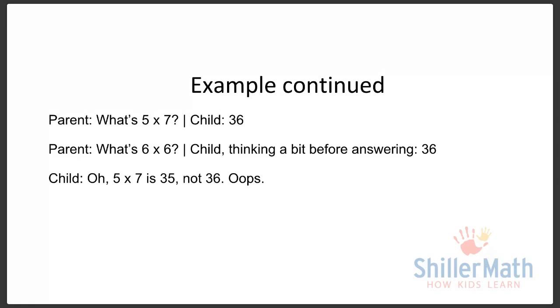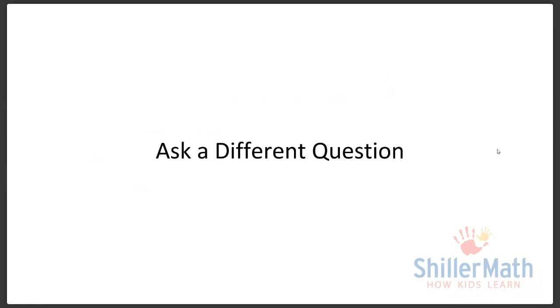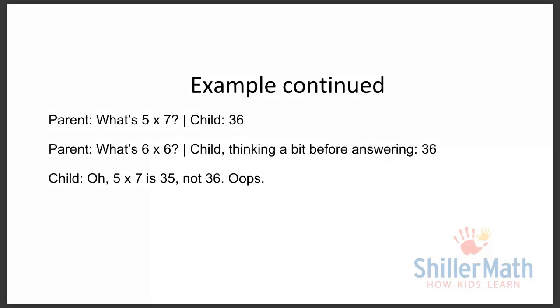A key technique the parent used in this example was to ask a different question—what's six times six?—whose answer, 36, was the wrong answer the child gave to the previous question. I just want to let that sink in a little bit because that is the core behind this. We're going to ask a different question whose answer was the wrong answer to the previous question, but it's the right answer to this question.